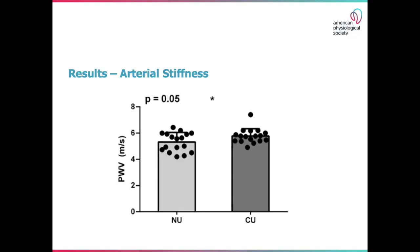When examining pulse wave velocity, we can see that cannabis users have significantly greater pulse wave velocity than non-users. This suggests that cannabis users have greater arterial stiffness than non-users, which would be associated with greater risk of future development of cardiovascular disease.